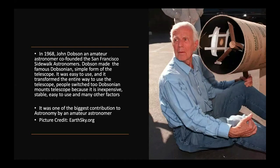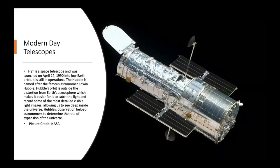John Dobson in 1968 was never a professional astronomer — he was an amateur astronomer, meaning he never held a degree, but he was still doing astronomy. The Hubble Space Telescope was launched on April 24, 1990 into low earth orbit, and it is still in operation. The Hubble is named after famous astronomer Edwin Hubble. Hubble's orbit is outside the distortion from earth's atmosphere, which makes it easier to capture visible light and record detailed images deep inside the universe. Hubble's observations helped astronomers determine the rate of expansion of the universe.